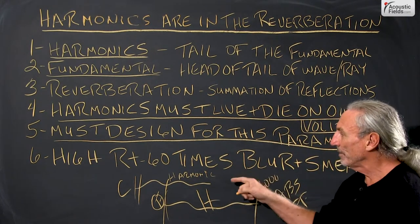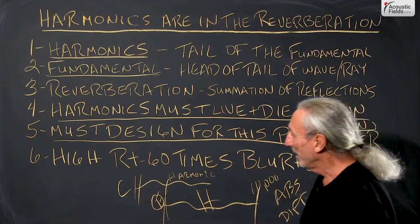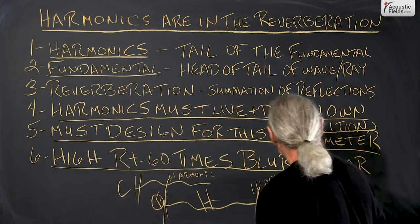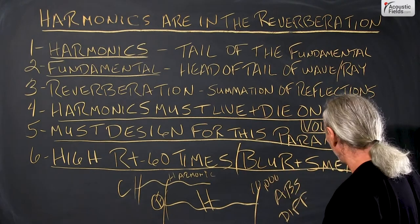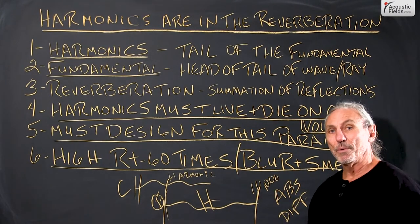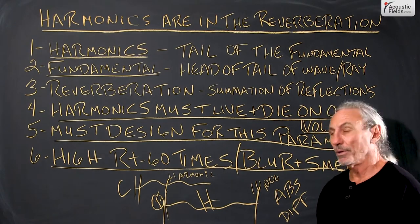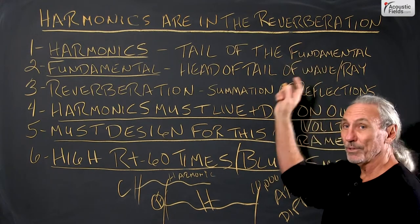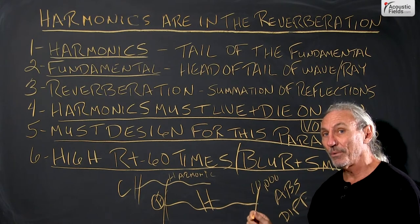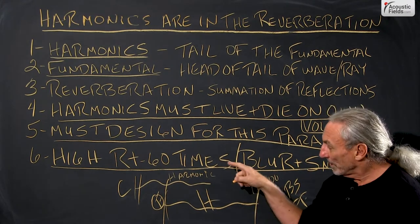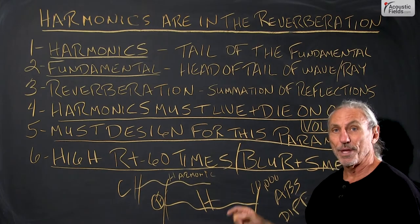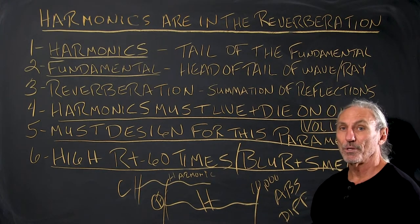You want to make sure that you do that. And if we have high RT60 times — reverberation times — then we get that blurring and smearing, that mud and soup, as we use for the term for the low end. So, harmonics are in the reverberation. You have to manage the reverberation time correctly so that you can let the harmonic breathe, let the harmonic live and die on its own.